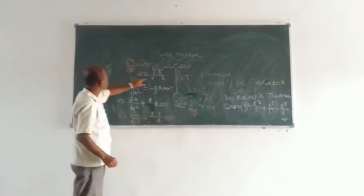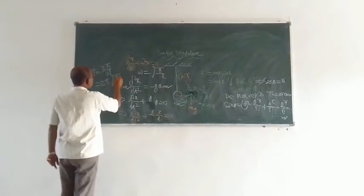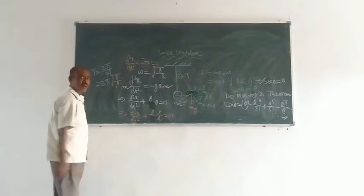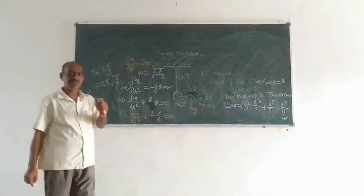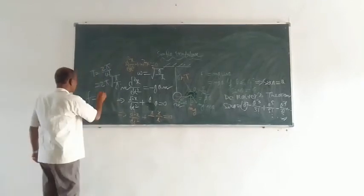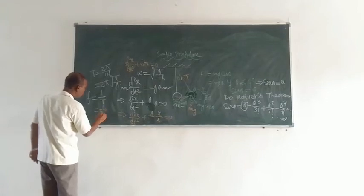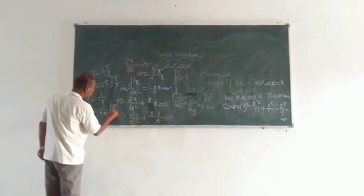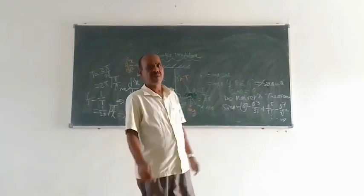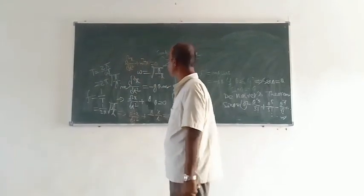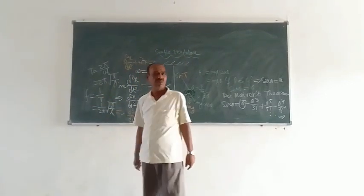Now putting the expression for omega, we get: time period T equals 2 pi times the square root of l over g. The frequency of oscillation is the reciprocal of the time period. So frequency f equals 1 over T, which equals 1 over 2 pi times the square root of g over l. These are the expressions required for the simple pendulum — this is the time period and this is the frequency.